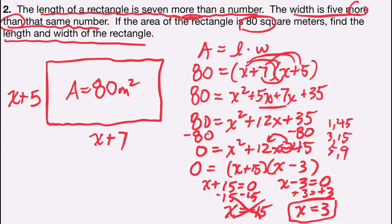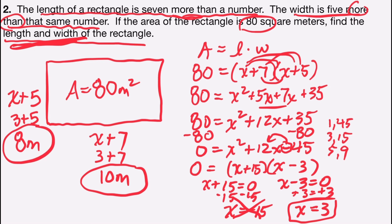For the other factor, I'm going to add 3 on both sides and find out that x equals 3. So now I know that my number is 3. And I can use that to find the length and the width of the rectangle by substituting. So the width would be x plus 5. And now we know that x equals 3. So that would be 3 plus 5, which would be 8 meters for the width. And I'm going to substitute 3 for the x in the length. 3 plus 7 is 10 meters. And so I know my length is 10 meters and my width is 8 meters.